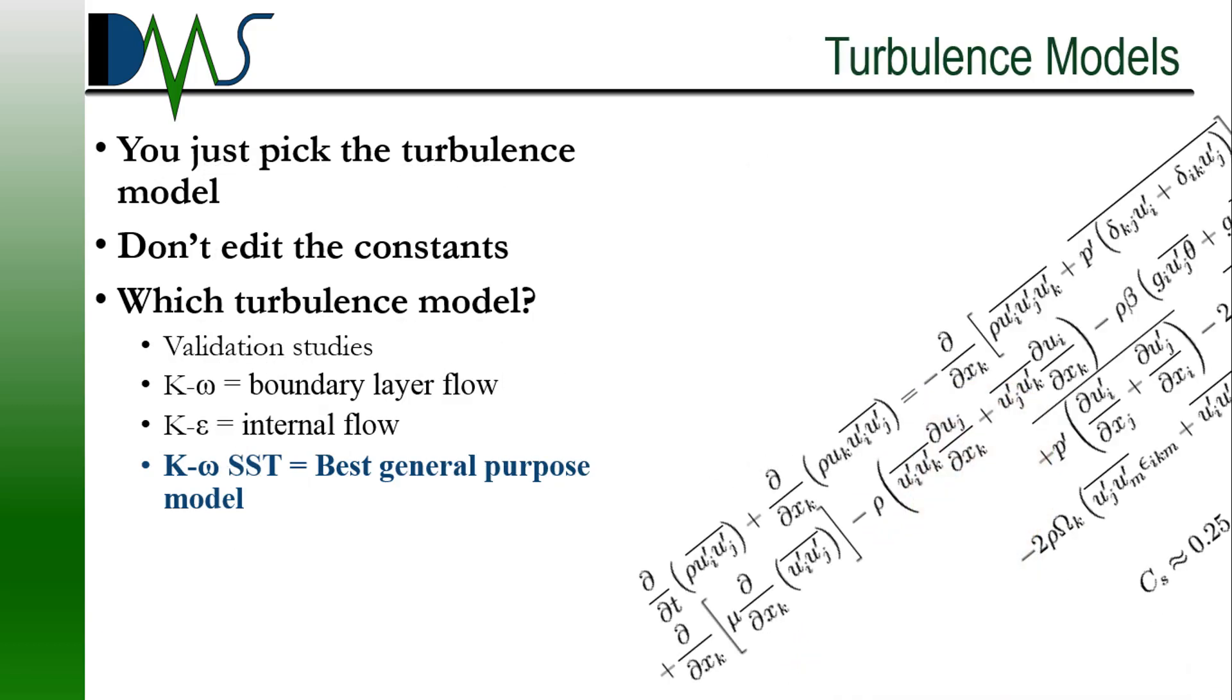K epsilon is not the only turbulence model out there. There are actually quite a few that you can pick from. You get to pick the turbulence model. And there are going to be lots of different ones that you can pick from. They're going to change depending on the situation. But some of the things I will say, don't edit the constants. All these turbulence models will have different constants associated with them. Unless you're the guy that wrote the paper actually designing the turbulence model, you probably don't want to edit those constants.